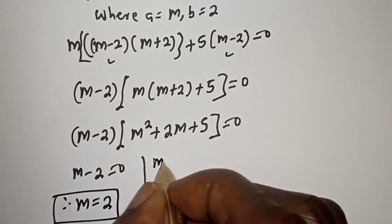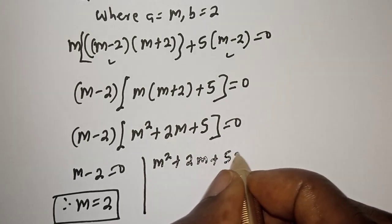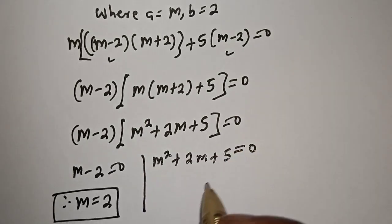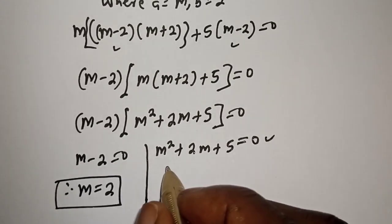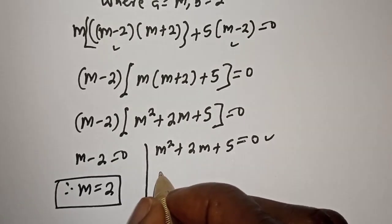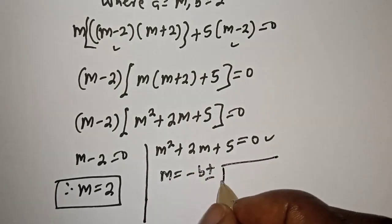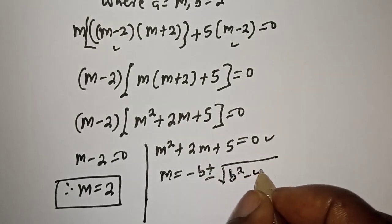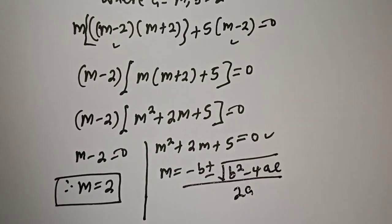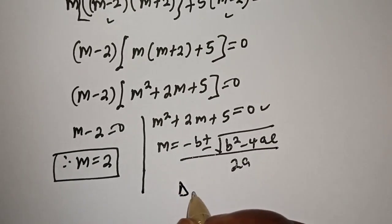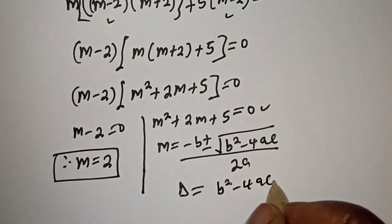The second case is m squared plus 2m plus 5 equals 0. This is a quadratic equation. We solve it using the quadratic formula: m equals negative b plus or minus the square root of b squared minus 4ac, all over 2a. The discriminant is D equals b squared minus 4ac.